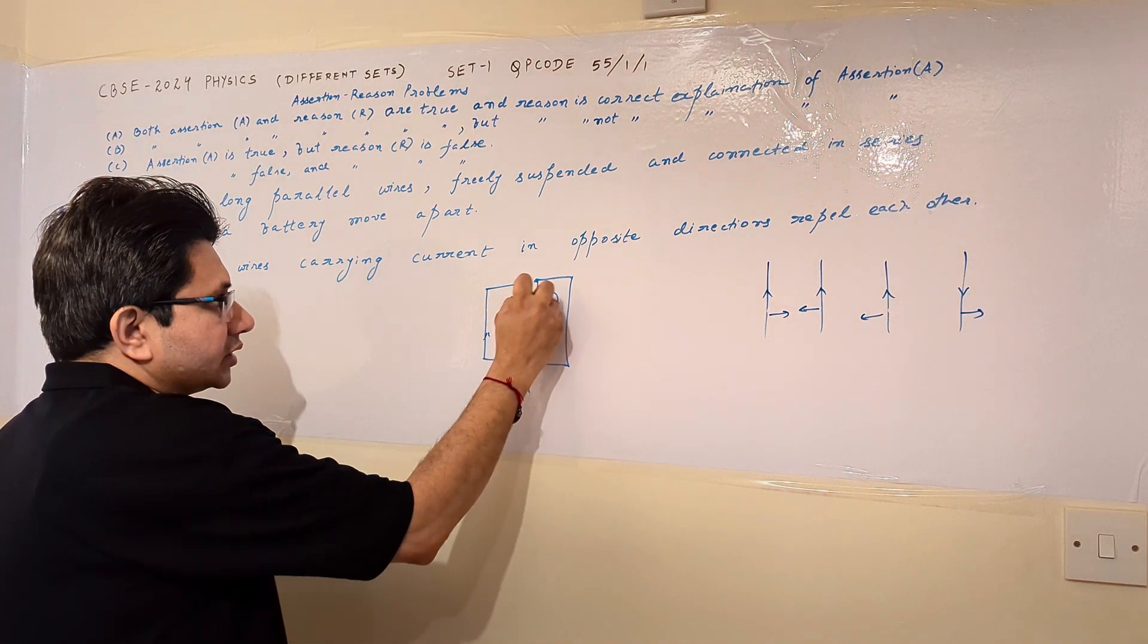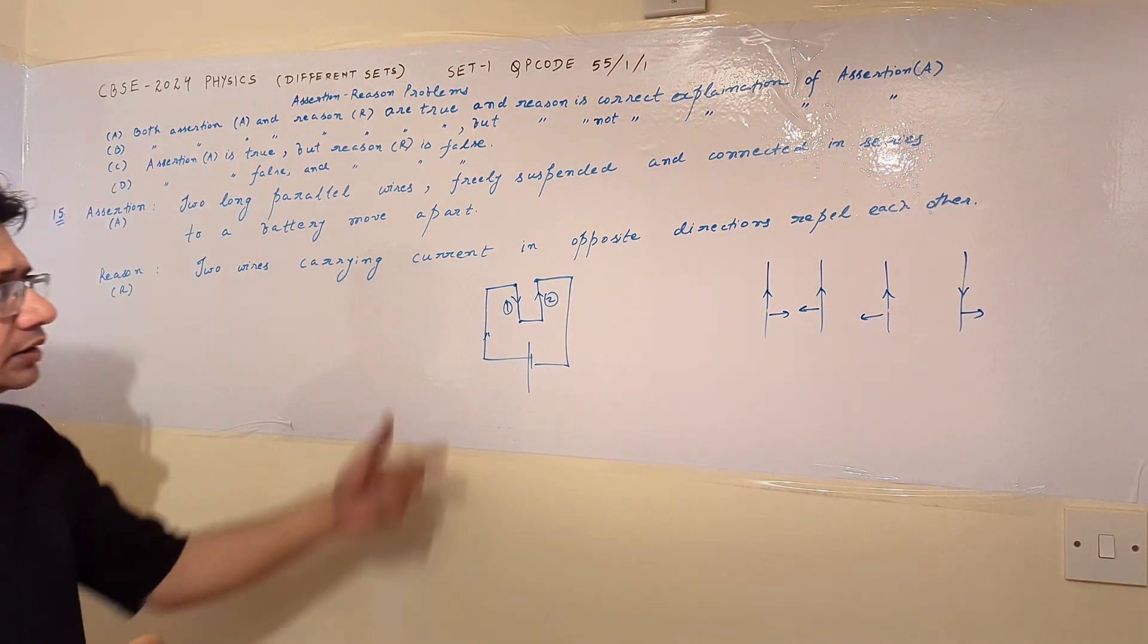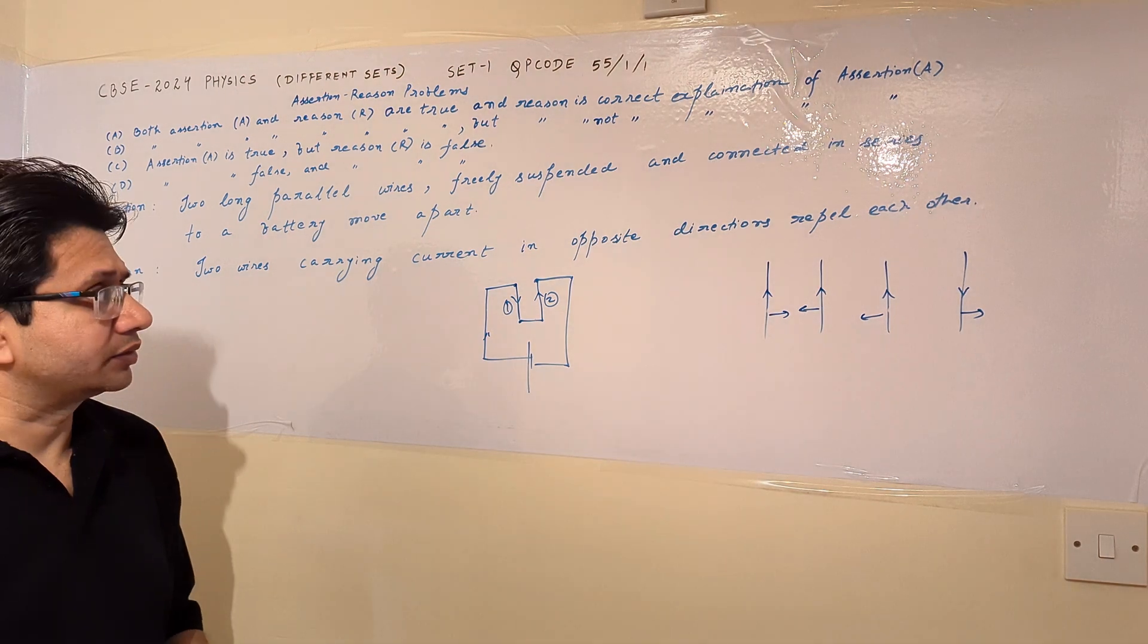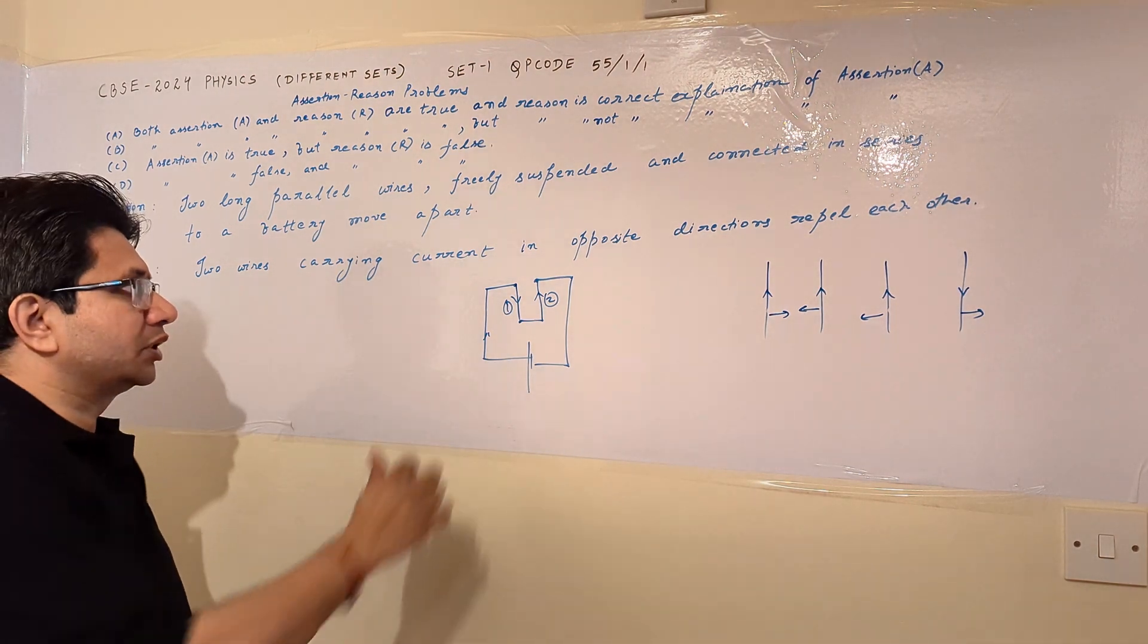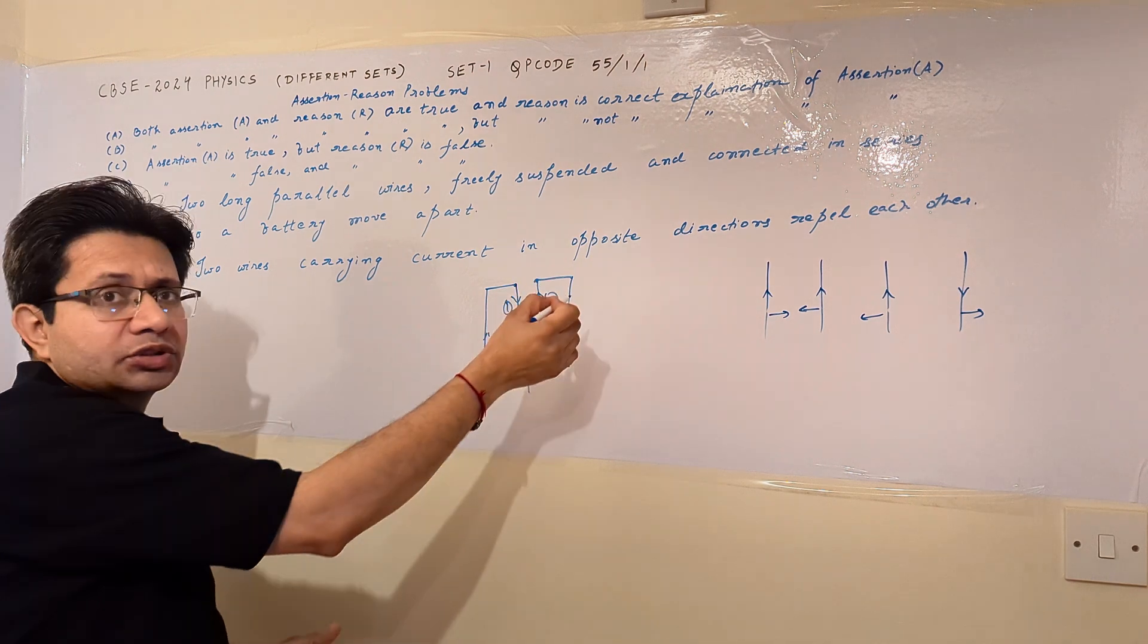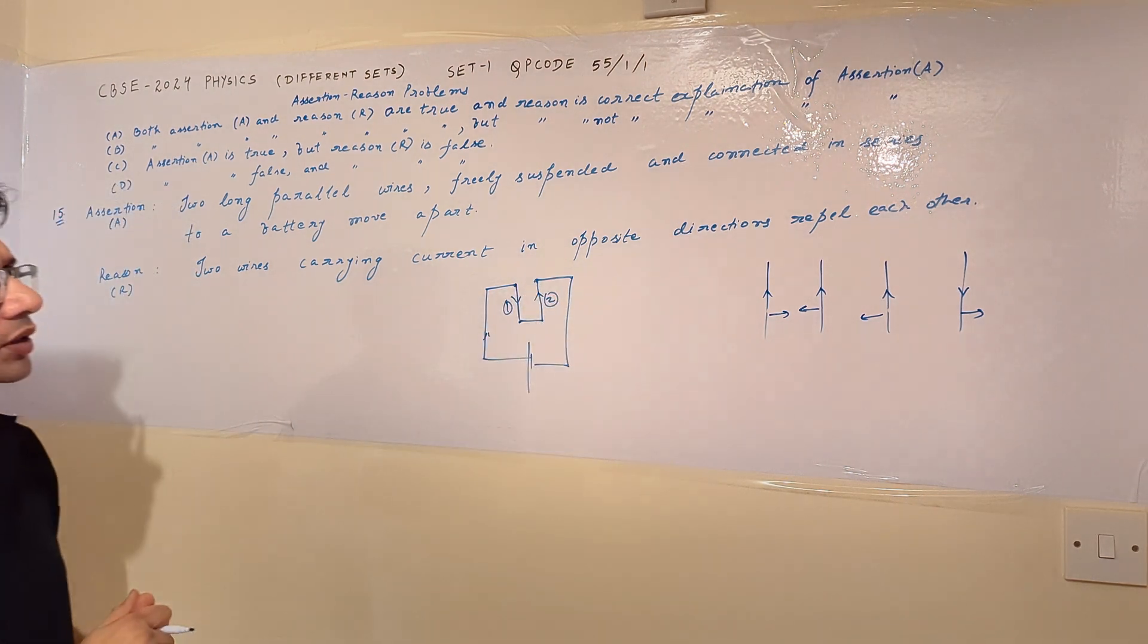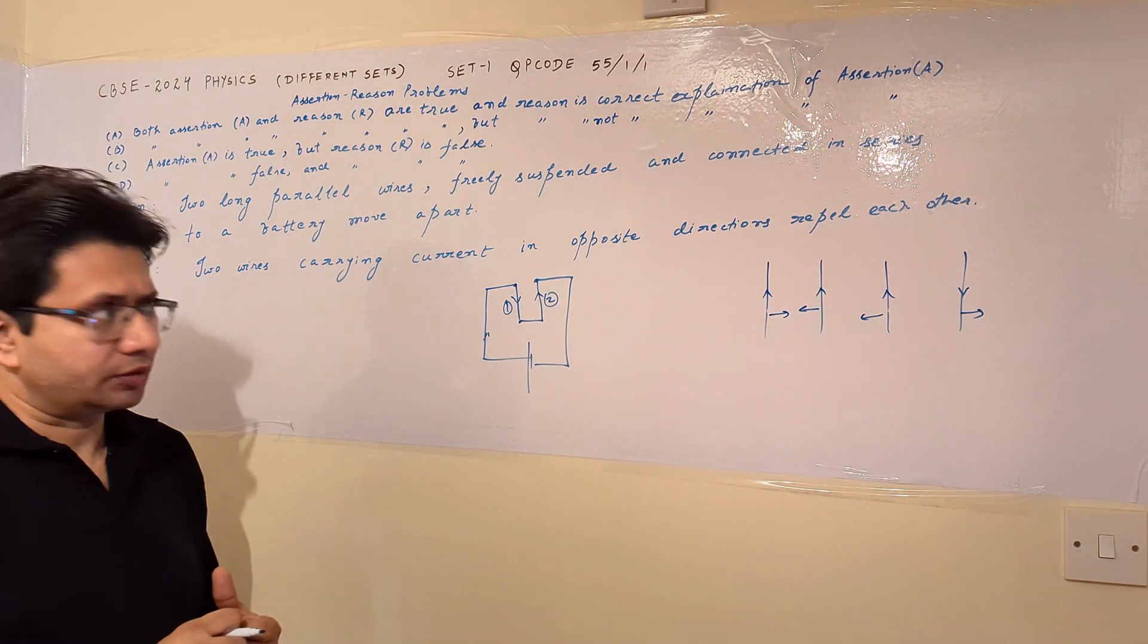Then in that particular case, we can see easily that they carry the current in the opposite direction, because in series it is possible only when they carry current in opposite direction. So in this way they repel each other.